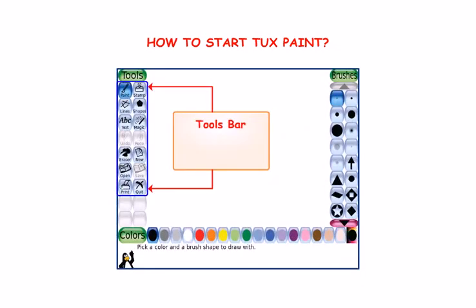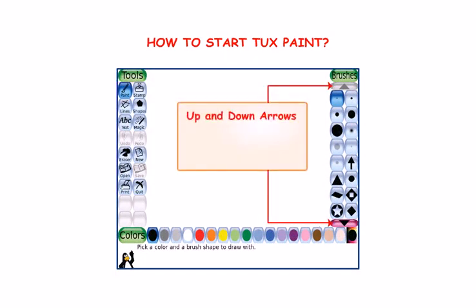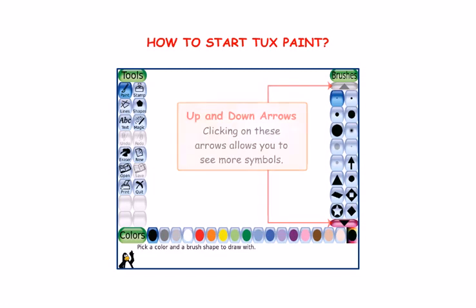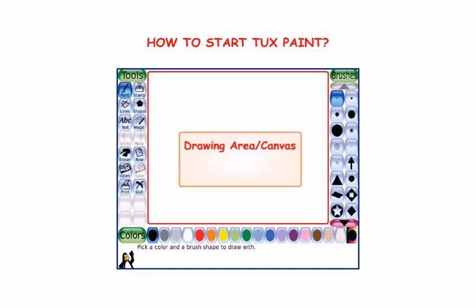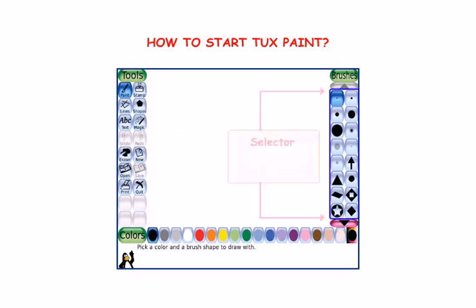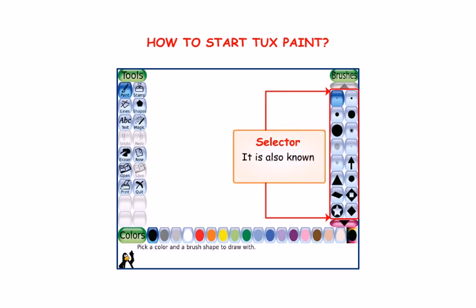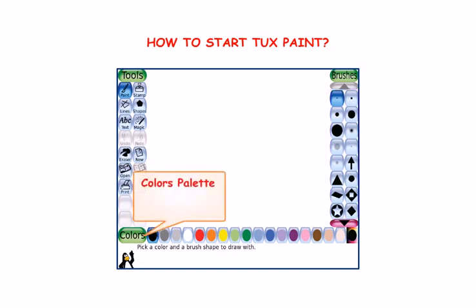Tools Bar contains a variety of tools. Up and Down Arrows — clicking on these arrows allows you to see more symbols. Drawing Area or Canvas is the base used for drawing. Selector is also known as Subtoolbox. Colors Palette contains the colors.